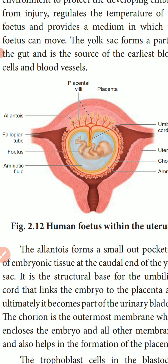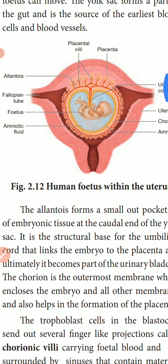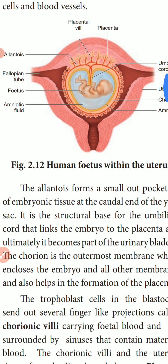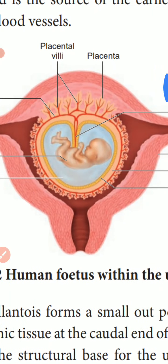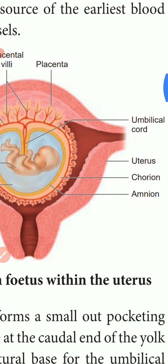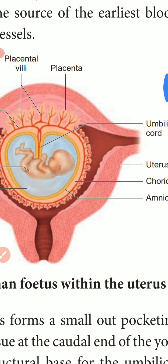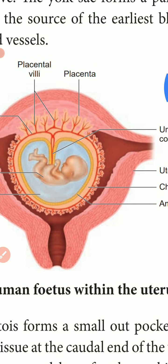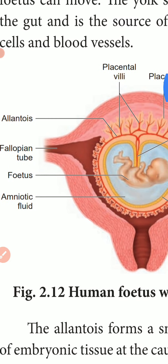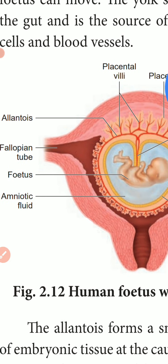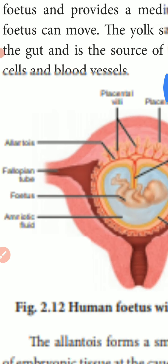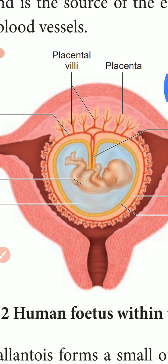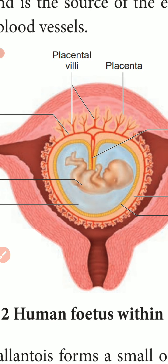The next one is Allantois. The allantois forms a small out-pocketing of embryonic tissues at the caudal end of the yolk sac. It is a structural base for the umbilical cord that links the embryo to the placenta.